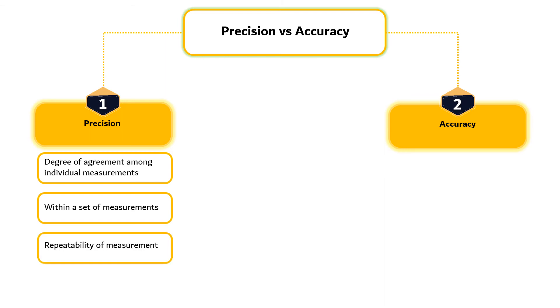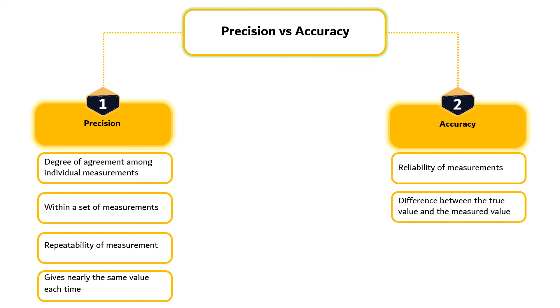A precise measuring instrument gives nearly the same value each time it is used to measure the same condition. Accuracy is a measure of the reliability of measurements and indicates the difference between the true value and the measured values of a certain quantity.